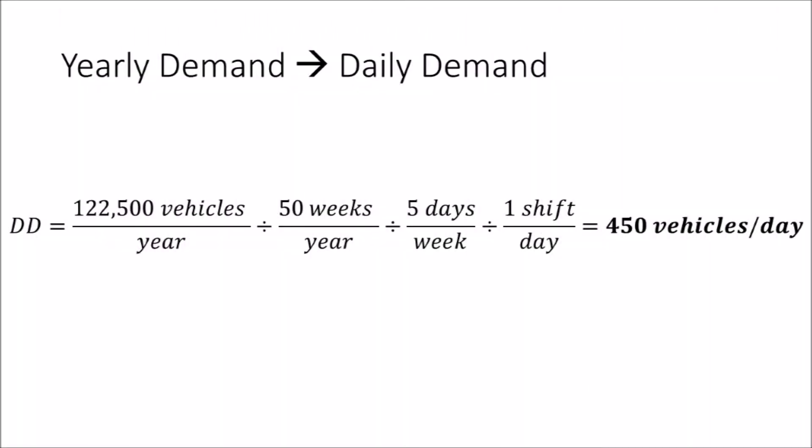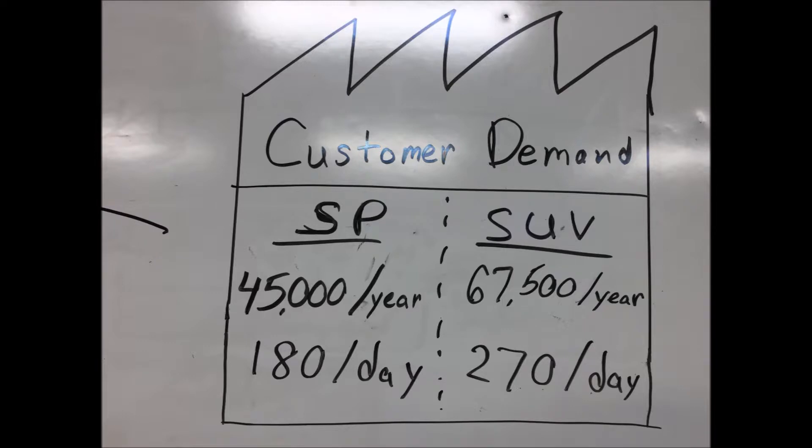Step 1: Customer Demand. The first step of drawing a current state map starts with the customer. In our example, we are given the yearly demand for Speedster and SUV type vehicles. We convert the yearly demand into a daily demand and write the information on our map in the top right hand corner.